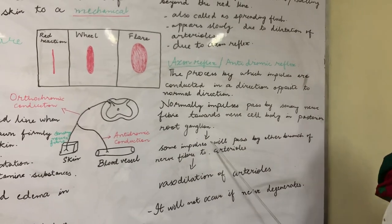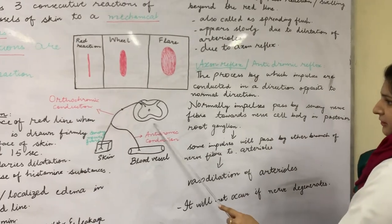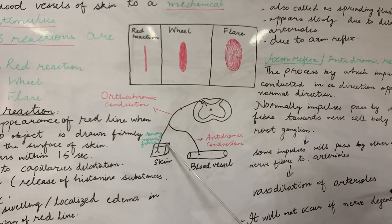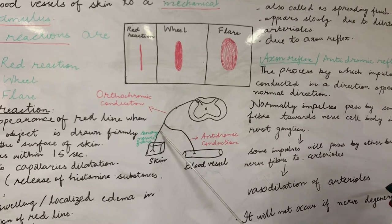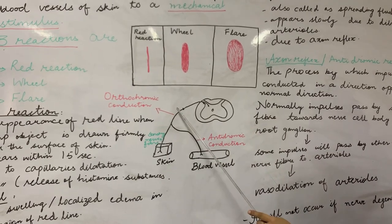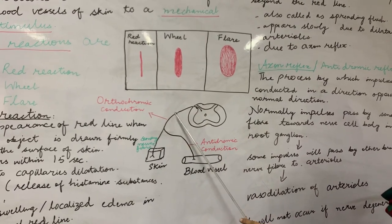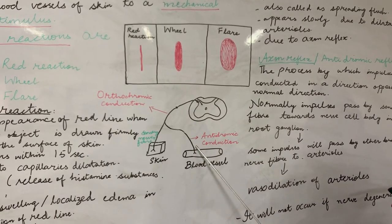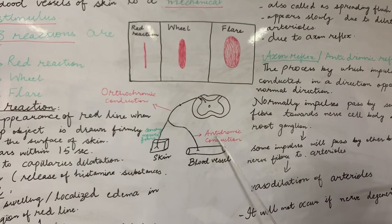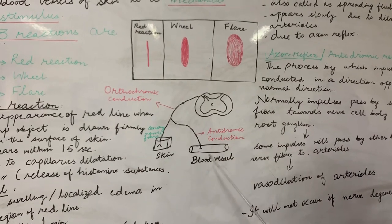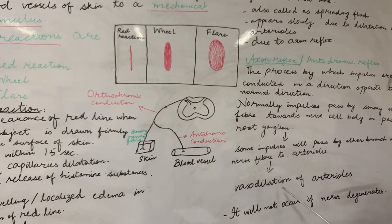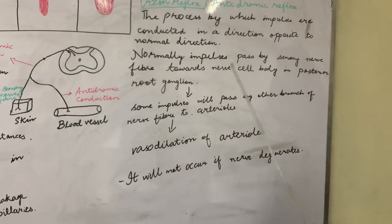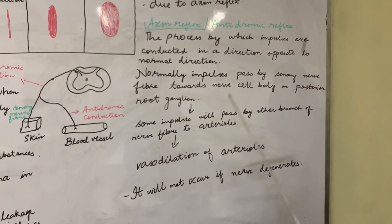Now I will show you the diagram of this explanation. For example, if we make a scratch on the skin, impulses are transmitted by way of the sensory nerve fibre to the sensory neurons in the posterior root ganglion. But another branch of the same nerve fibre will travel to the arterioles — this is called antidromic conduction — resulting in vasodilation of the arterioles. The end result is the third reaction of the triple response, which is flare.